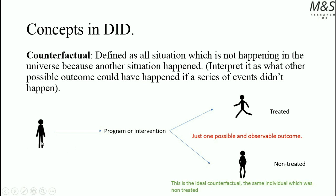We want to change this individual's situation — to have better welfare — by implementing a program or intervention over them. One of the possible observable outcomes is whether the individual was treated or non-treated. The problem with the counterfactual is that in order to establish what was the impact of our treatment, we would need the ideal counterfactual: the same individual who was non-treated when the treatment has been given. However, in reality, there's only one of the two possible ways after an intervention — treated or non-treated — and this ideal counterfactual is not measurable or observable in reality.